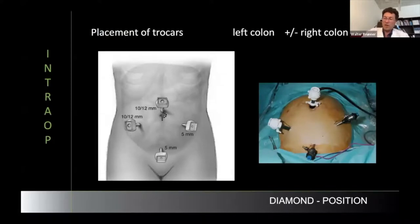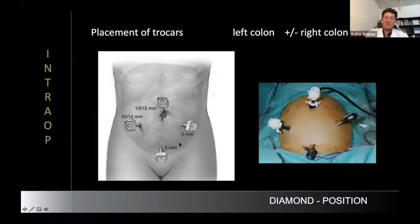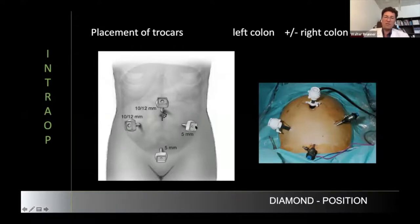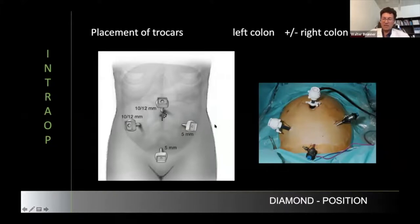For example, Colin showed one option for trocar placement. The diamond position works for both left and right colon. You can put the camera wherever you want if it's 5mm; if it's 10mm, for the right side you might have two 10mm ports so you can switch camera position. Switching the camera multiple times during an operation is not a good option — better to learn it in one position. There's not just one way to go.